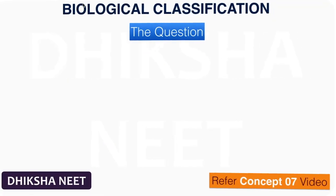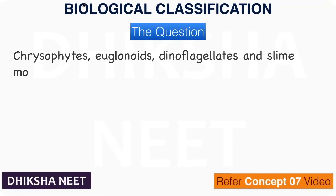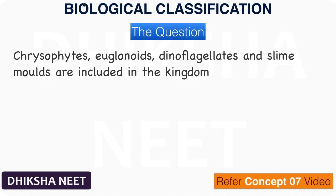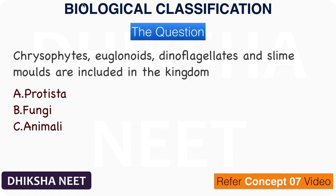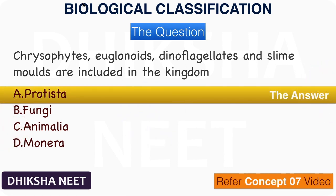The question: Chrysophytes, euglenoids, dinoflagellates, and slime molds are included in the Kingdom — A. Protista, B. Fungi, C. Animalia, D. Monera. The answer is option A. Protista.